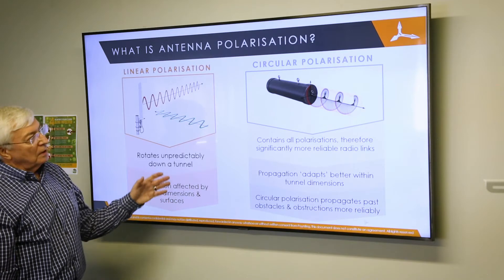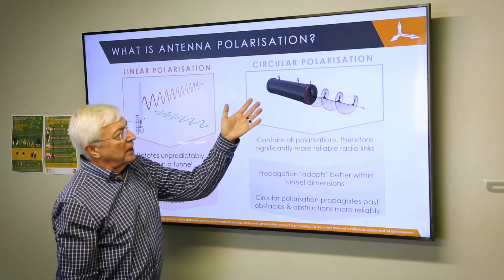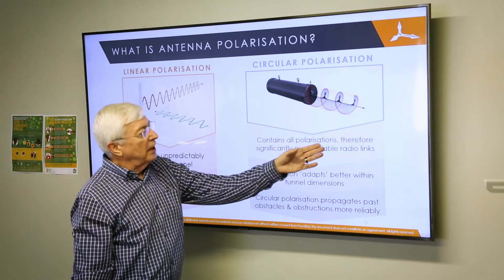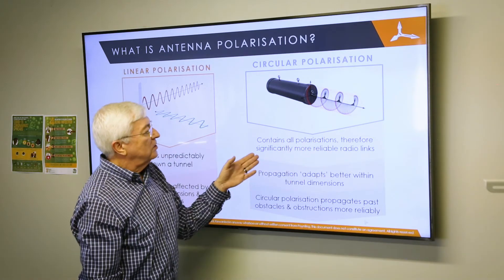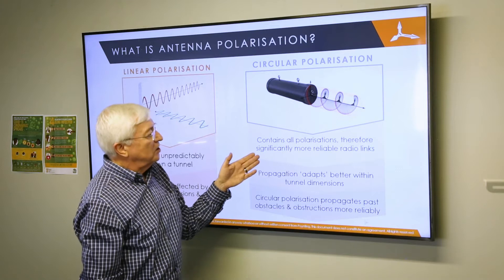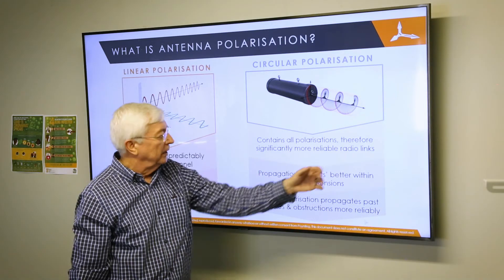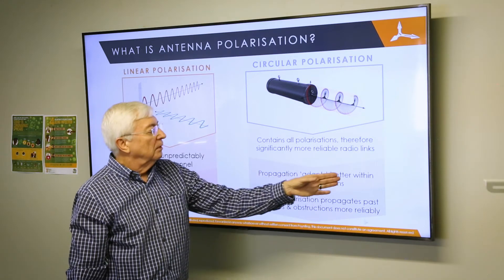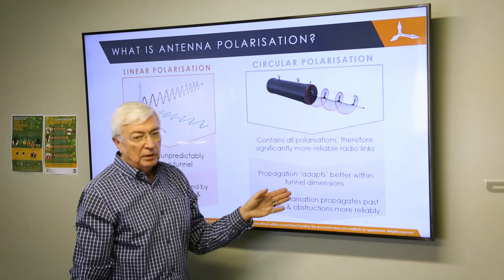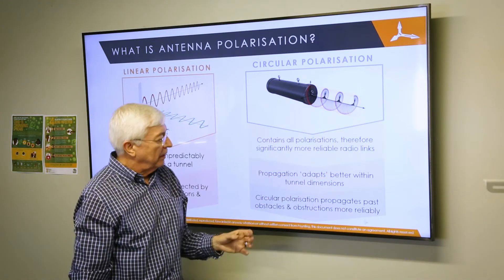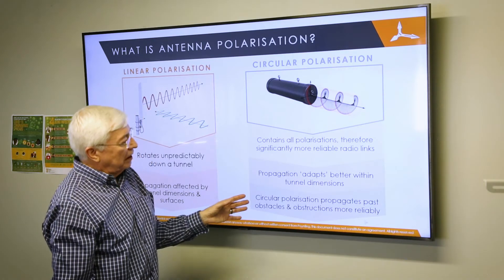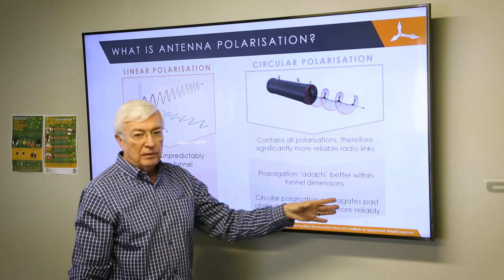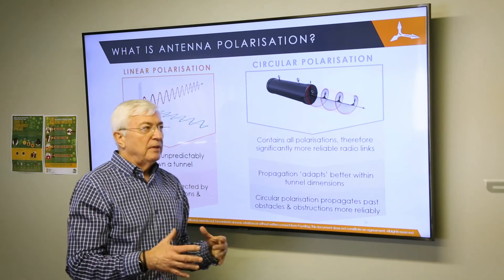Now let's look at circular polarization. With circular polarization we actually contain all of the different polarizations, and that creates a significantly more reliable radio link. It's like the propagation adapts better to the tunnel dimensions, and circular polarization also propagates past obstacles and obstructions far more reliably.